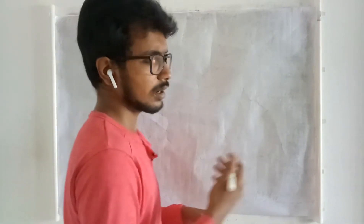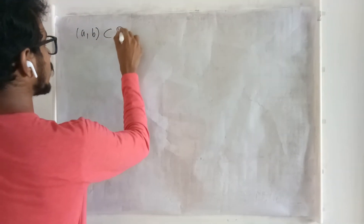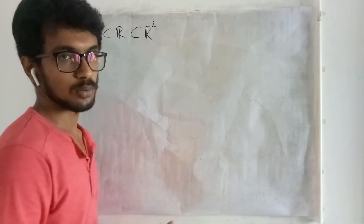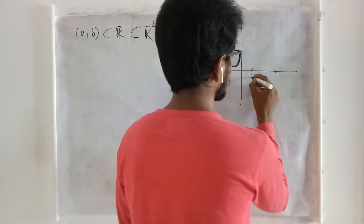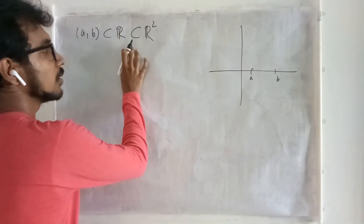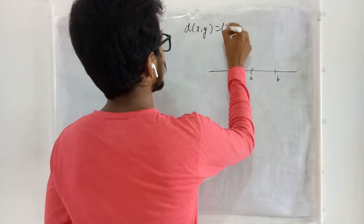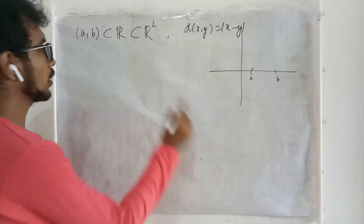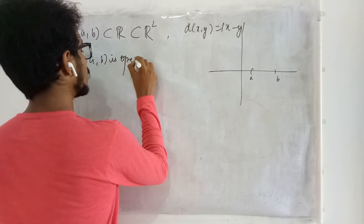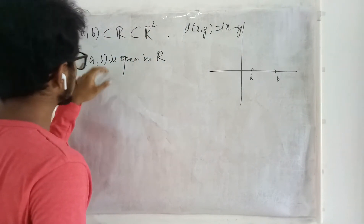Let me recall the examples we have seen while studying the definitions of open sets, closed sets, and perfect sets. We have considered a segment as a subset of R, which can also be treated as a subset of R2 — meaning in a plane I am considering a segment. We know that this segment is an open set in R, where the metric we consider is the standard Euclidean metric. But this segment is not open in R2.